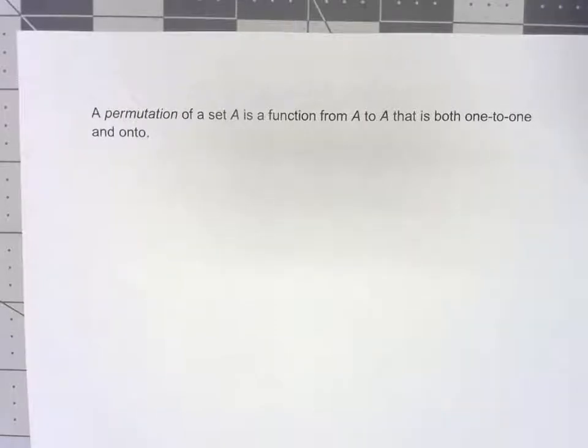We want to start building toward one of the most important types of groups that we can think of. So we're going to start by defining a permutation of a set, and all that is is a function from the set to itself, and that function has to be a bijection. It has to be both one-to-one and onto.